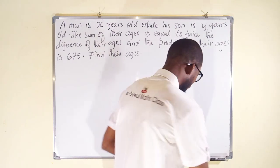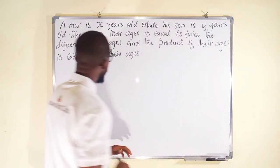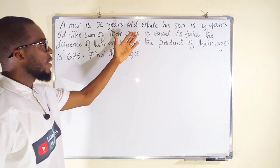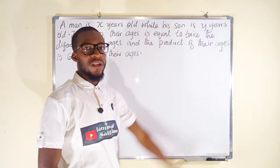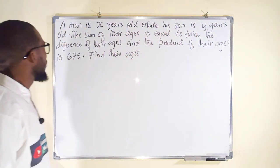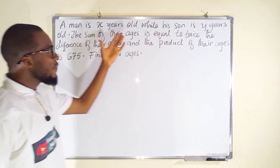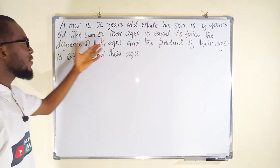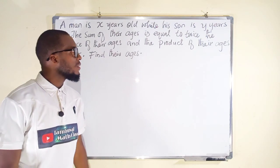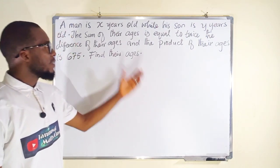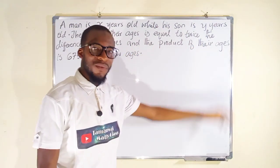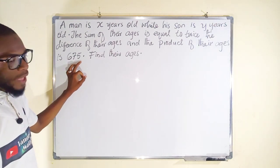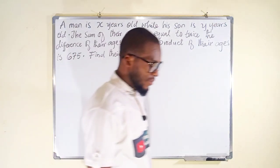Now let's get started. This question says: a man is x years old while his son is y years old. The sum of their ages equals twice the difference of their ages, and the product of their ages is 675. We are asked to find their respective ages.